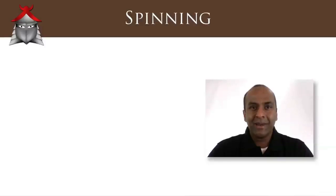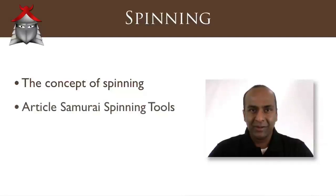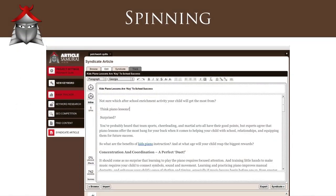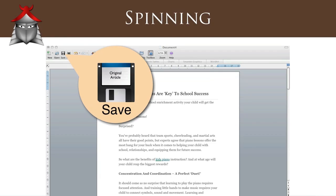In this video we'll examine the concept of spinning and take a closer look at the spinning tools that come with Article Samurai. Whether you write your article from scratch in the article editor or copy and paste your content from a word processor, it's important to always save a copy of your original article before you spin it. The main reason is that spinning with Content Boss changes your article by introducing numerous spin blocks into the article text.